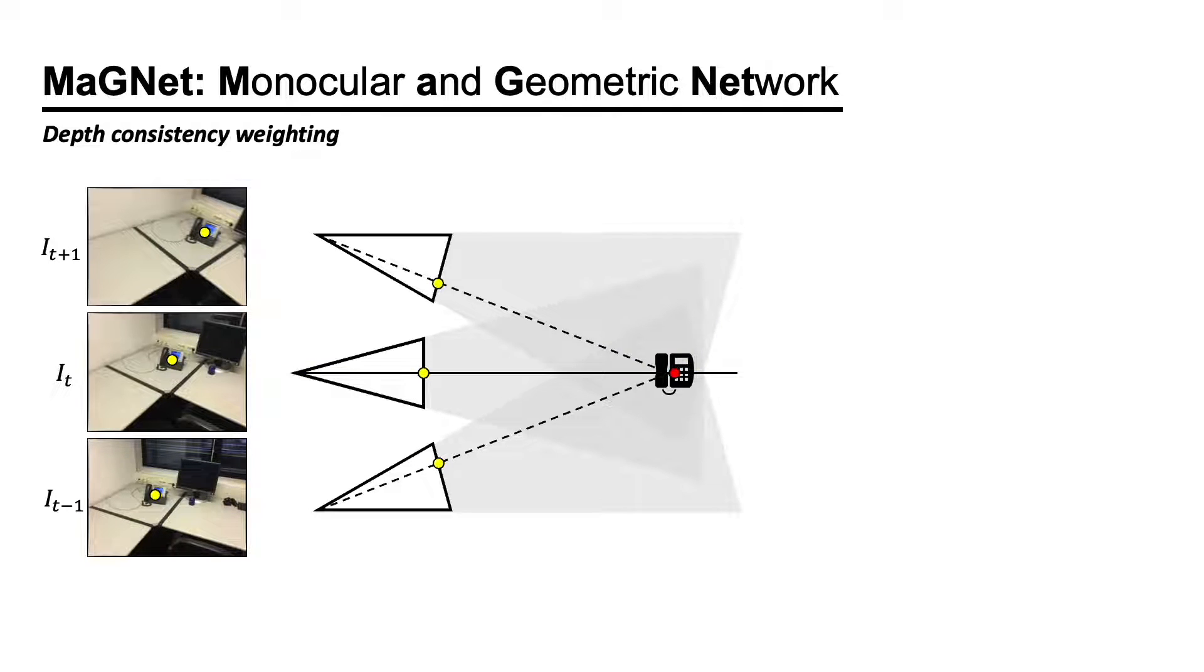Secondly, we introduce depth consistency rating. Suppose that the 3D point corresponding to the correct depth candidate is occluded in a particular viewpoint. For such cases, the multi-view matching score should not be computed. We do this by evaluating the single-view depth probability.